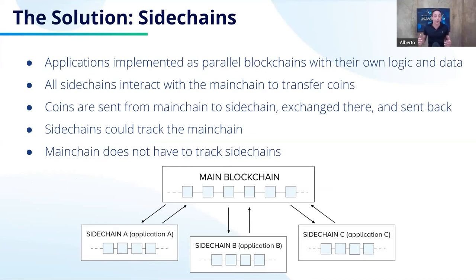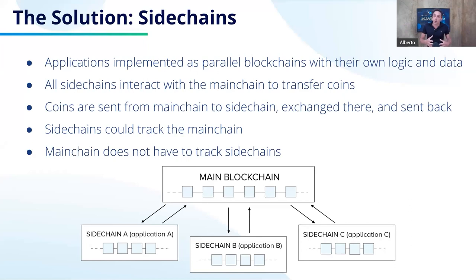Sidechains are like applications implemented as parallel blockchains with their own logic and data. All these sidechains can interact with the main chain to transfer coins. You can transfer from the main chain — the Zen blockchain — to a sidechain some coins, exchange these coins there, and then some users may want to have them back on the main chain, for example to send to an exchange. It's acceptable that a sidechain tracks the main chain, meaning it is aware of what is happening on the main chain side — it can see its network and blocks.